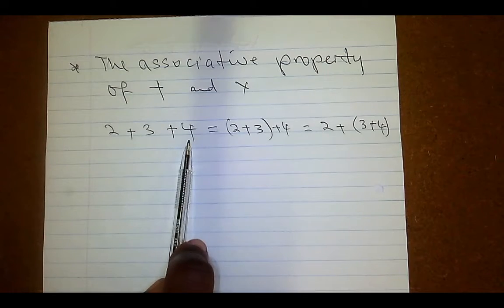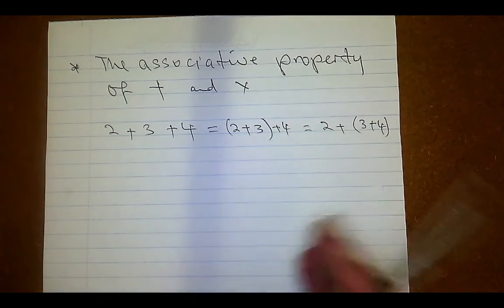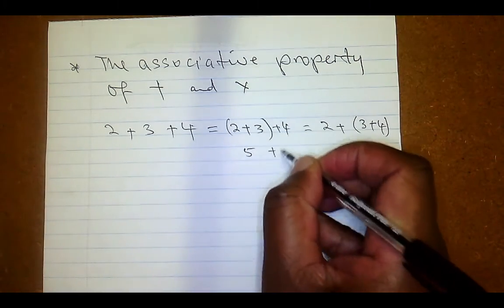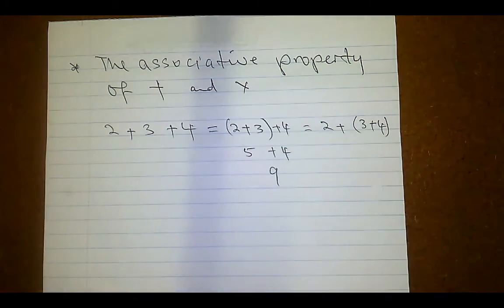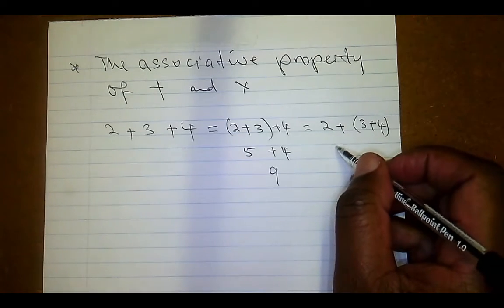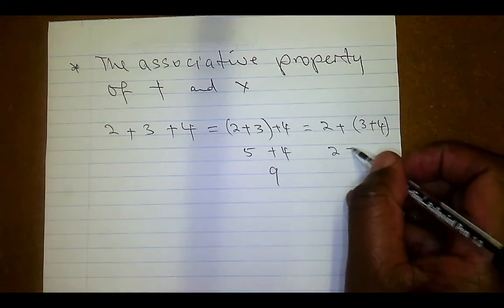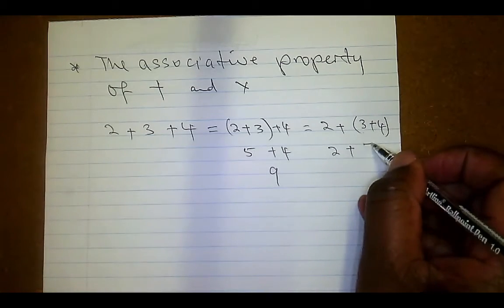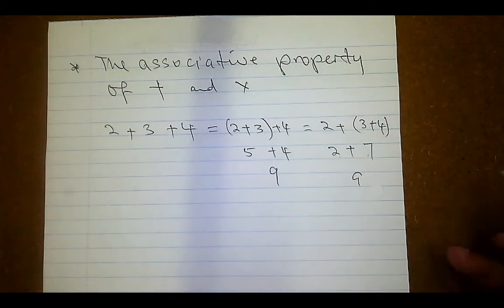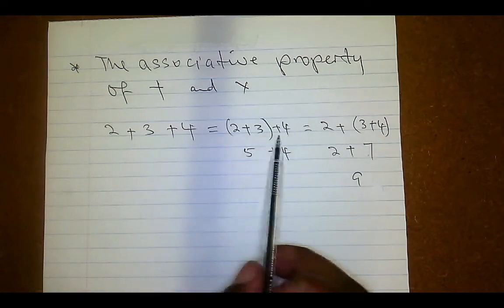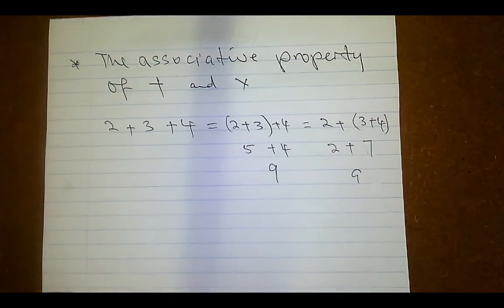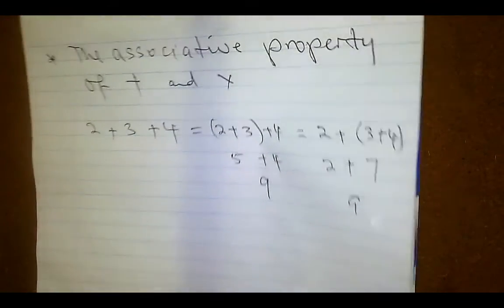Two plus three plus four gives you nine. If you group it as (two plus three) plus four: two plus three gives you five, then five plus four gives you nine. Or if you group it as two plus (three plus four): three plus four is seven, and two plus seven is also nine. So you can group either way — the associative law allows you to do that.